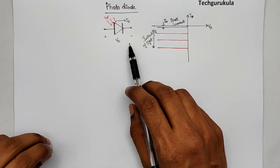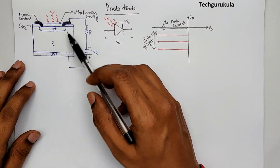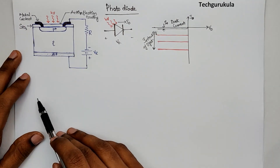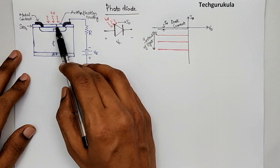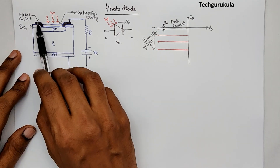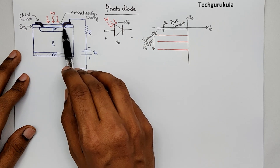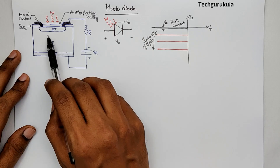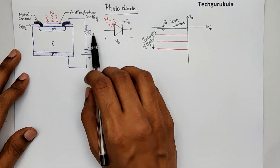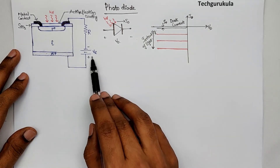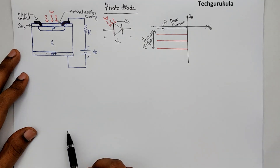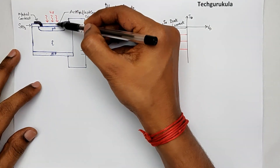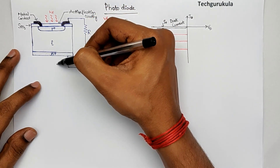The most commonly used diode for photo detection is a PIN diode. Here I have shown the structure of a PIN diode — the P region, the I (intrinsic) region, and the N region — with an anti-reflection coating so that most of the incident light goes into the PIN diode. Metal contacts connect the P region, and the circuit shows a load resistor R with the PIN diode reverse biased at voltage V_R. Now let's draw the energy band diagram for this PIN diode at this operating point.